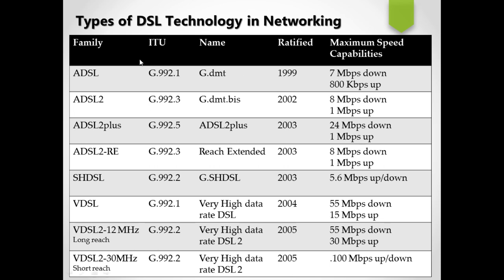Here are the types of DSL technology. ADSL: 7 Mbps downstream and 800 Kbps upstream, ratified in 1999. ADSL2 (2002): 8 Mbps downstream and 1 Mbps upstream. ADSL2+ (2003): 24 Mbps downstream and 1 Mbps upstream. ADSL2 RE (Reach Extended), also 2003: extended downstream reach with 1 Mbps upstream.